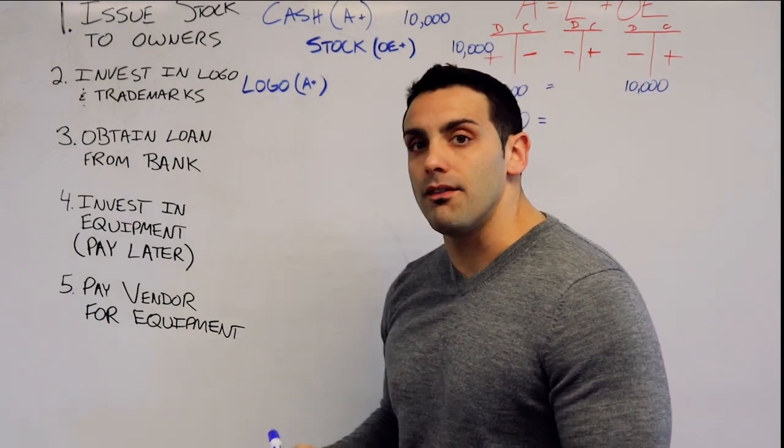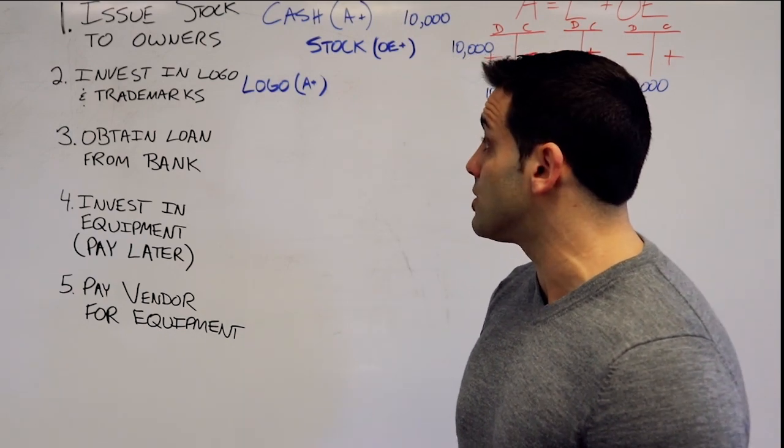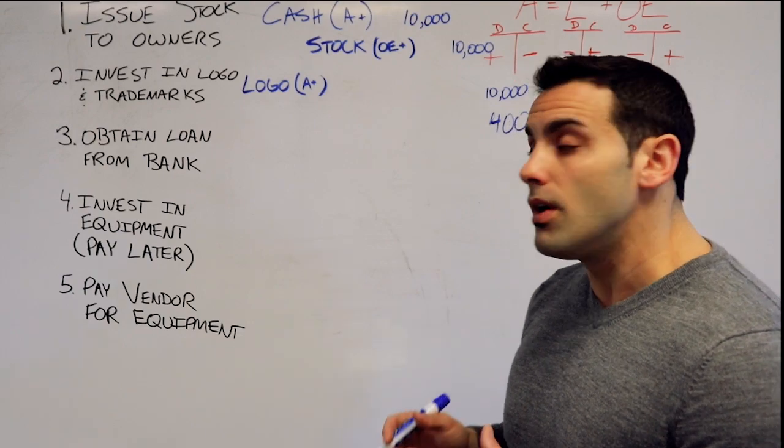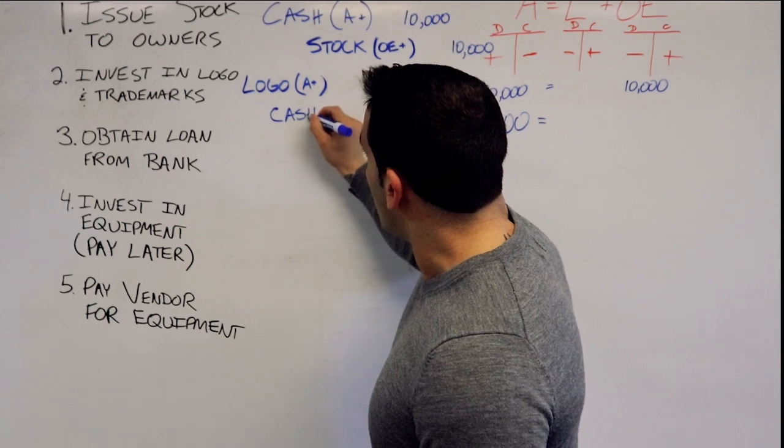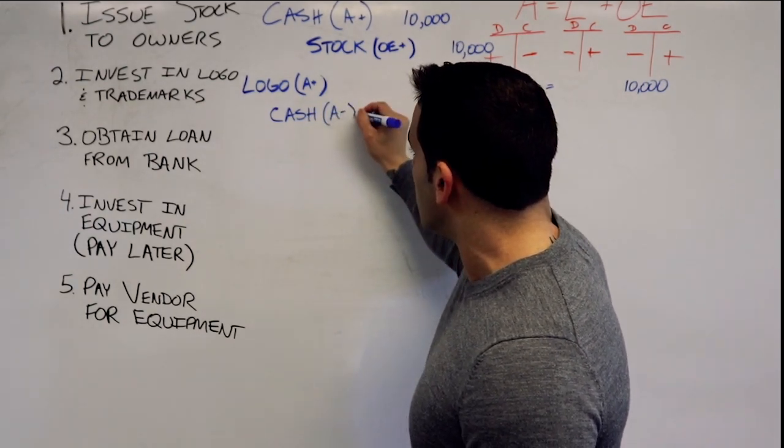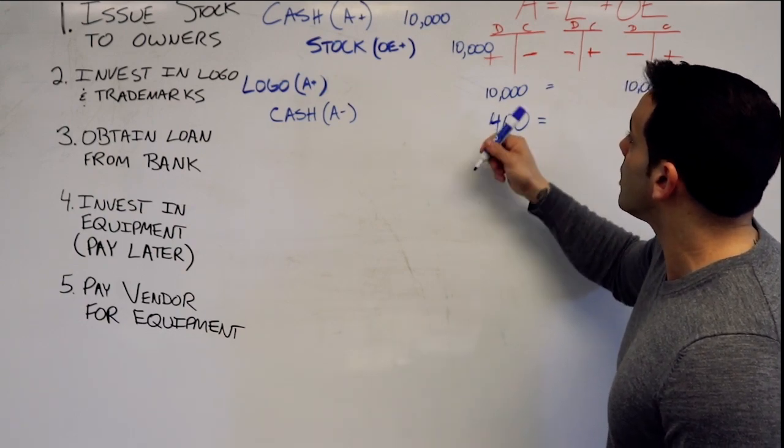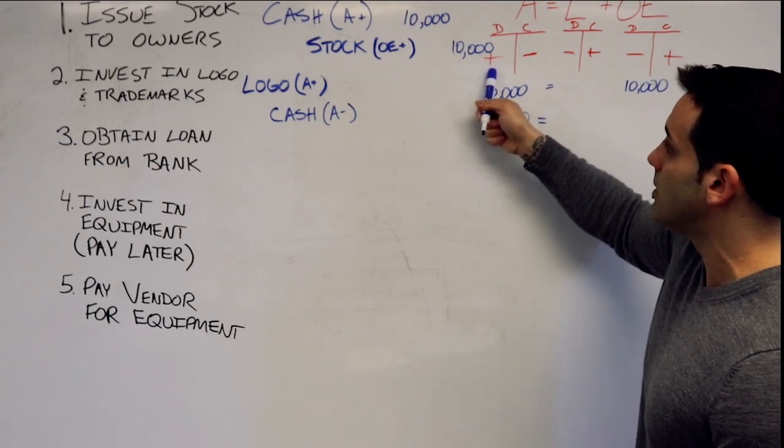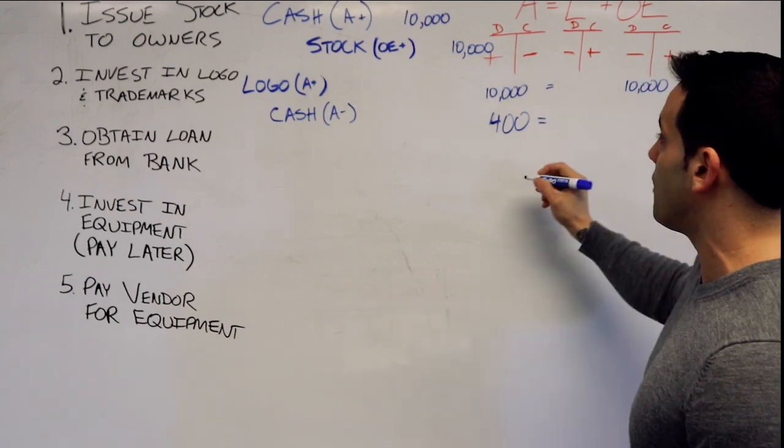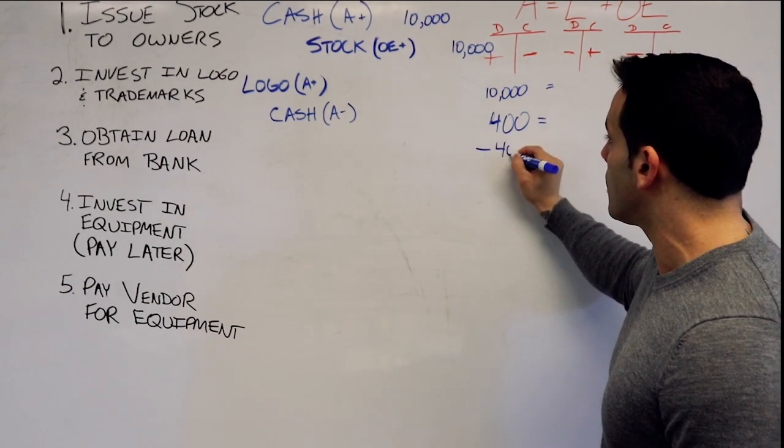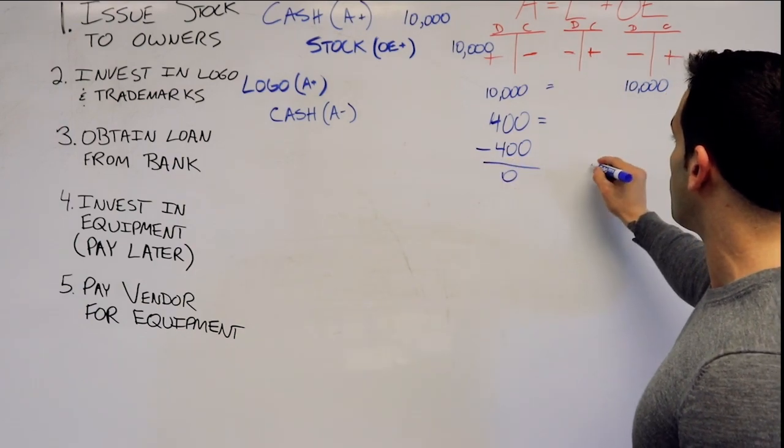Now, how do we pay for this logo and trademark? We're giving our vendor cash, especially if we're paying for it right away. So what we're doing is we are now decreasing another asset for $400. So we're increasing an asset by getting our logo, but we're decreasing cash, another asset, by giving them cash. Does this equal? Yes, it does, because this will net to zero.